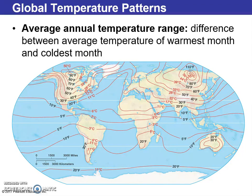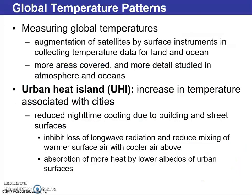We can also use isotherms for average annual temperature. This puts us between weather and climate — we're looking over a year, so it's not just weather since it's not tomorrow's forecast, but it's not long-term climate either since it doesn't span many years.